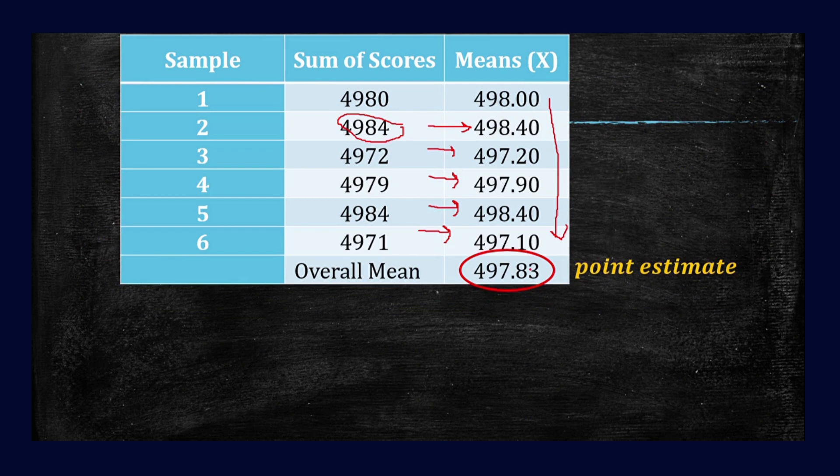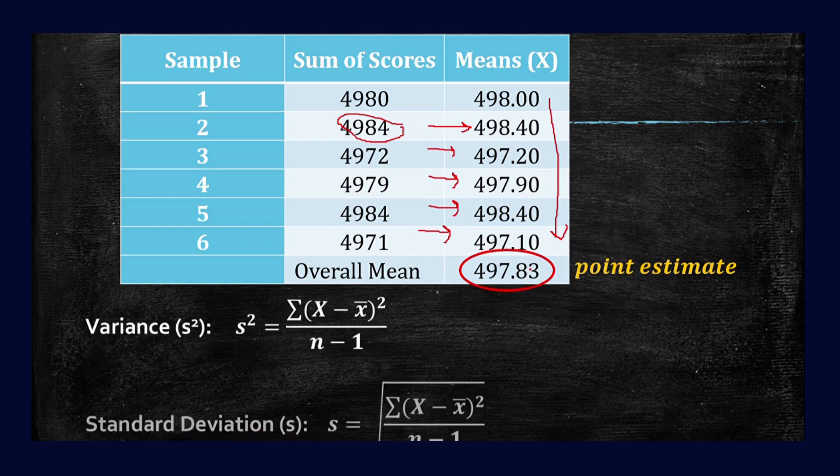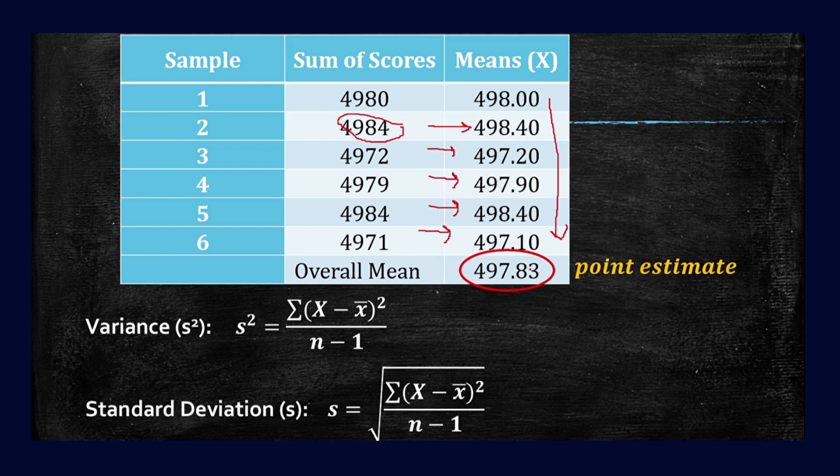So another population parameter is the variance and the standard deviation of the sample. So in getting the variance of the samples, this one is our formula. Variance is equal to the summation of the square of the difference of our mean and our point estimate divided by n minus 1.